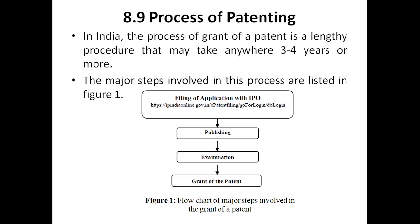Once you submit your answers, it goes back to the examiner. If the examiner finds all the answers satisfactory, he will say the patent can be granted — or he can also reject it with reasons. Once he approves, the patent office will grant you the patent. So the major steps are: filing the application with the IPO, publishing after 18 months (or within six months for early publication), filing a request for examination, and finally the grant of patent.